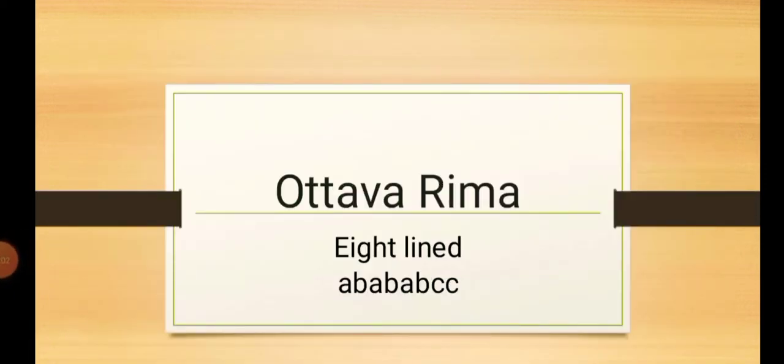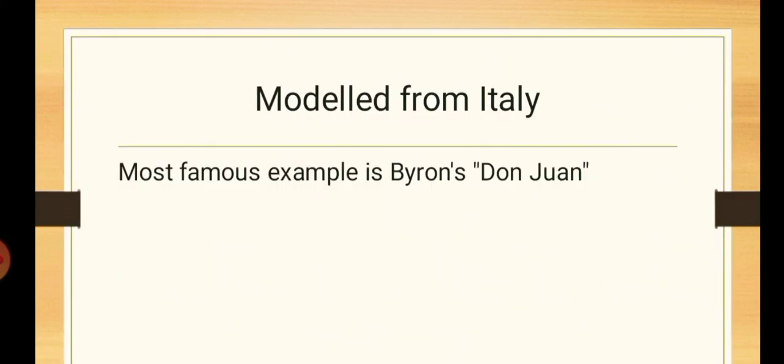Another stanza pattern which is very famous is Ottava Rima. As the name suggests, Ottava means eight-lined, and the rhyme scheme which it follows is AB, AB, AB, AB and CC. It is a very simple form of stanza pattern. Just you have to see that the lines are followed in this rhythm. Plus, there are eight lines altogether. It has derived from Italy. It is modeled upon Italian works. The most famous work in English is Byron's Don Juan, written in Ottava Rima.